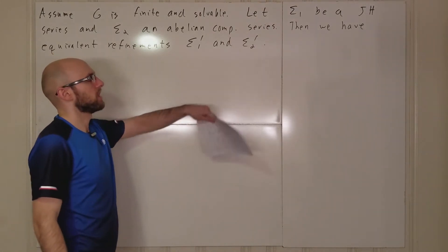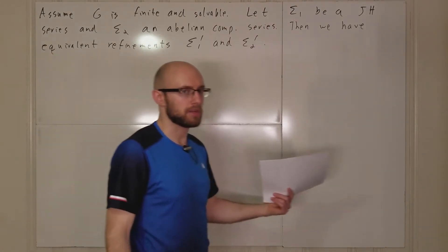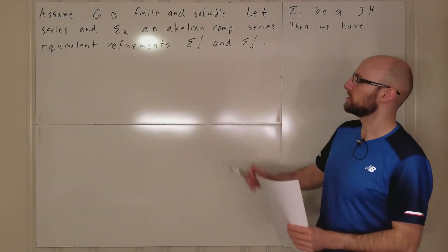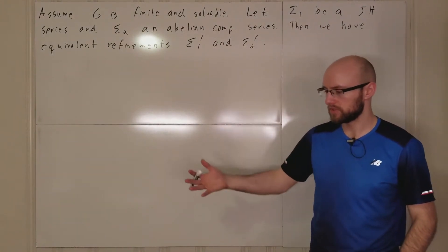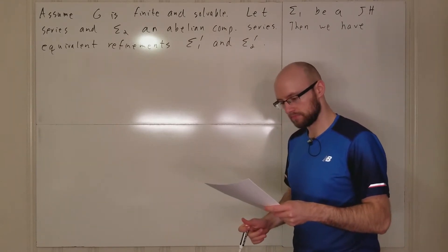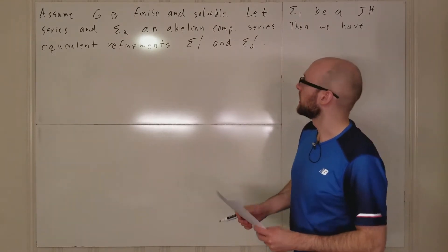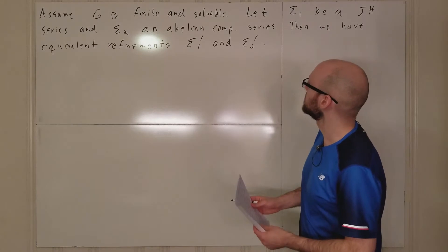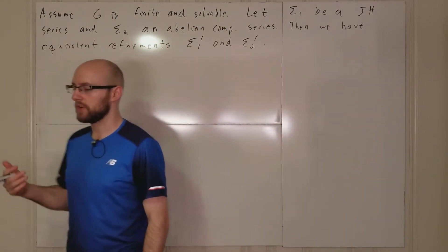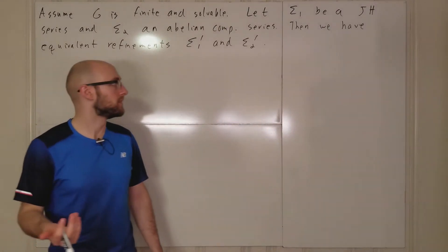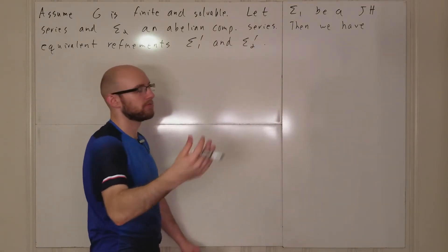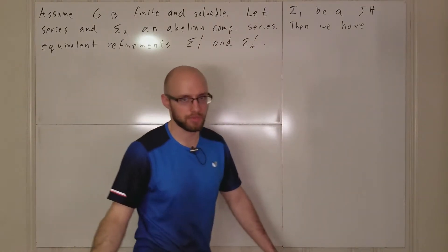Sigma 2 prime: we arrived at sigma 2 prime by taking an Abelian filtration and adding in more stuff to it. And because it's a refinement of an Abelian composition series, the refinement is also going to be Abelian.